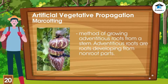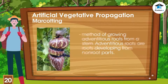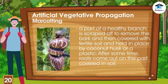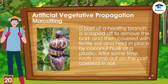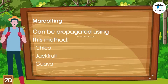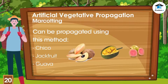Marcotting is a method of growing adventitious roots from a stem. Adventitious roots are roots developing from non-root parts. In this method, a part of a healthy branch is scraped off to remove the bark, then covered with fertile soil and held in place by coconut husk or plastic. After some time, roots come out on the covered part, and if this part is cut and planted, it will grow into a new plant. Common trees propagated through marcotting include chico, jackfruit, and guava.